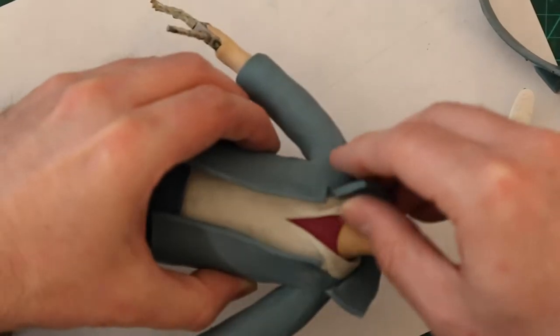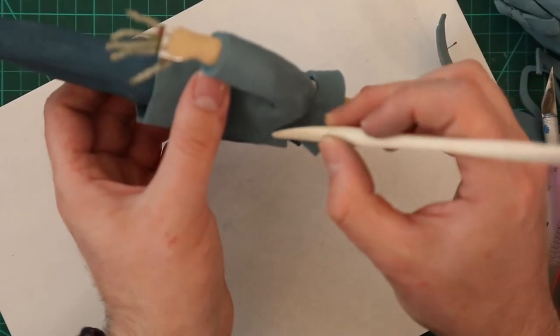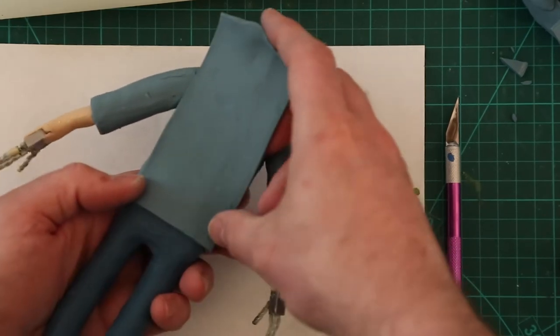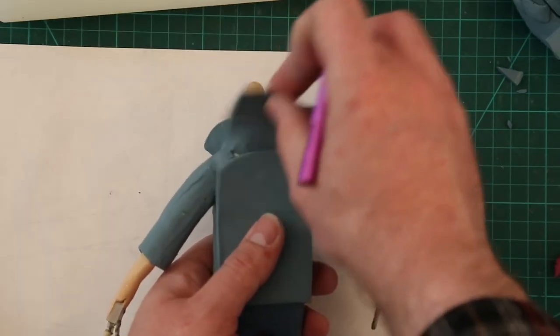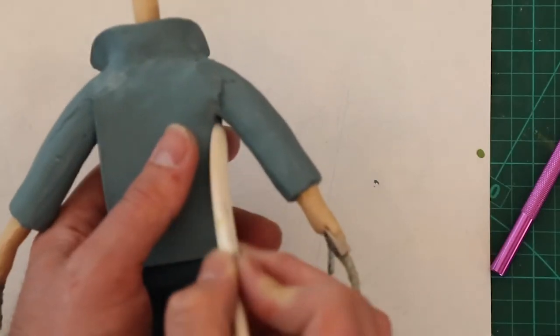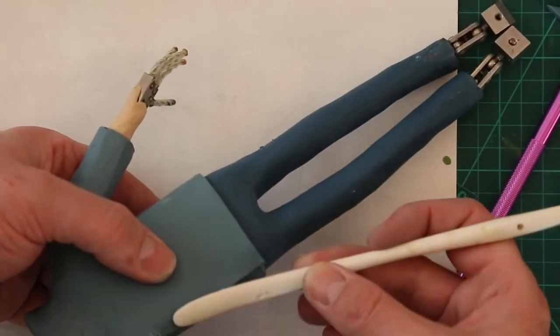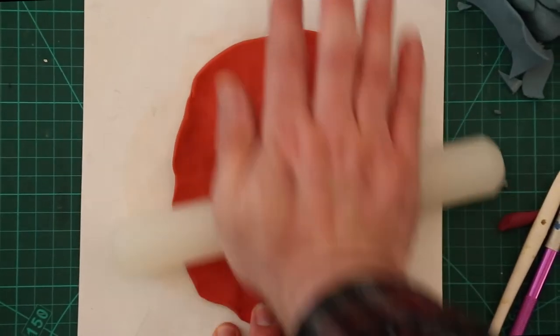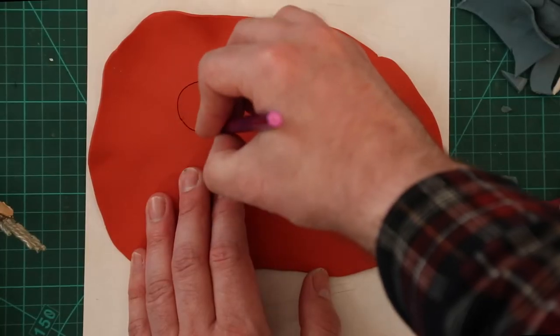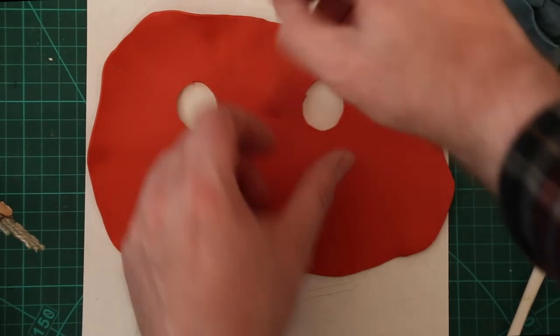I hate doing collars. Why do I always do this to myself? Now I'm just filling out the back. I probably didn't need to do this, it's going to get covered by the puffer jacket anyway. Now I'm just doing his puffer jacket. This was actually quite fun to do. It took a while, but I actually quite enjoyed making this part of the costume.